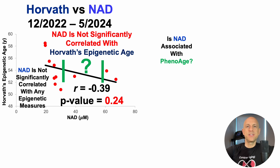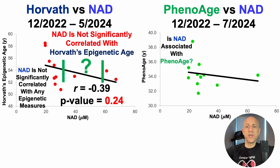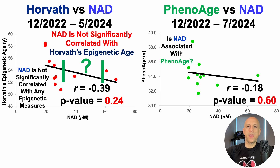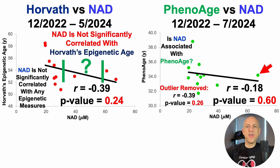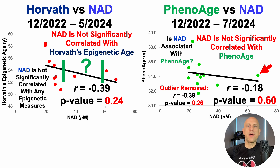What about PhenoAge — is NAD significantly correlated with PhenoAge? Visually, right from the jump, the trend line is going in the right direction: higher NAD would be correlated with a younger PhenoAge. But the stats show they are not significantly correlated, with a p-value of 0.6, far higher than 0.05. It looks like we've got an outlier — greater than 60 micromolar for NAD. If I remove that data point and rerun the stats with 10 tests, the correlation improves from -0.18 to -0.39, and the p-value gets closer to 0.05 at 0.26. Still, over 10 or 11 tests, NAD is not significantly correlated with PhenoAge.